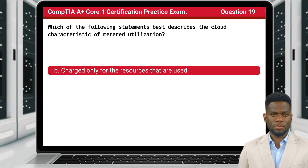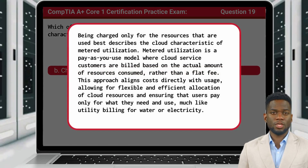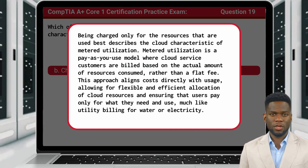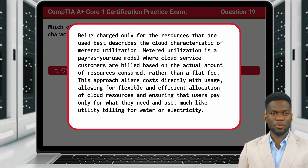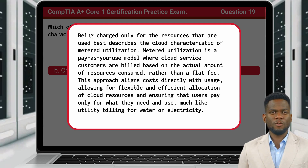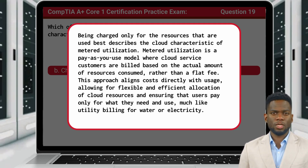The answer is B: Charged only for the resources that are used. Being charged only for the resources that are used best describes the cloud characteristic of metered utilization. Metered utilization is a pay-as-you-use model where cloud service customers are billed based on the actual amount of resources consumed, rather than a flat fee. This approach aligns costs directly with usage, allowing for flexible and efficient allocation of cloud resources, much like utility billing for water or electricity.